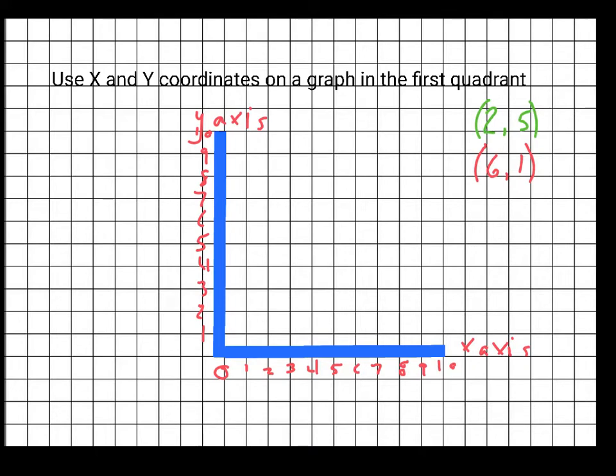For (2,5), I start at 0 and I count along the x-axis. Remember, the x-axis always comes first, so I go to 2, and then I'm at 0 here, and then I count up to 5. So that is where my first point will be.